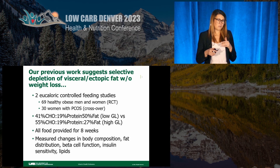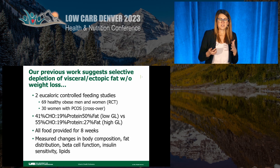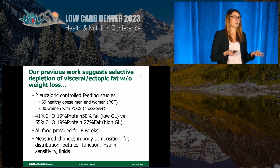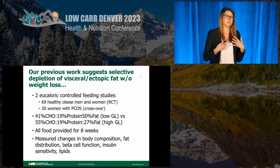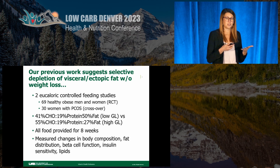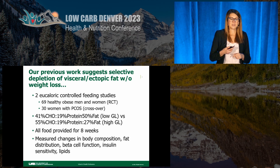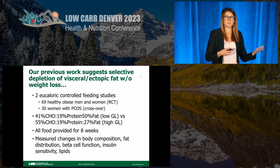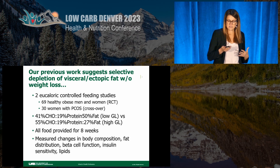It wasn't very low-carb by any stretch of the imagination — it was 41% carb on our low-glycemic diet. Protein was held constant on both diets, and fat was higher on the low-glycemic diet. These were controlled feeding studies, so the metabolic kitchen at UAB provided all of the food, weighed it out to be weight-maintaining. We used indirect calorimetry to determine the energy requirements of our participants to keep them in energy balance. We measured body composition using DEXA, fat distribution using MRI and CT imaging, and also beta cell function, insulin sensitivity, and lipids.